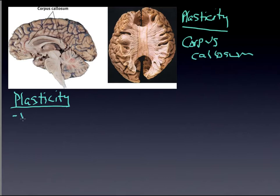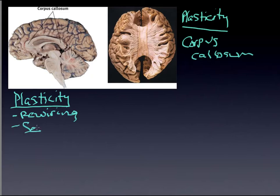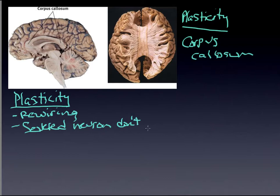This idea of rewiring has a ceiling, and there are two key components that are important to understand. First, severed neurons do not regenerate — we see that in spinal cord damage. There's a lot of conflicting ideas about that, but severed neurons simply don't regenerate.